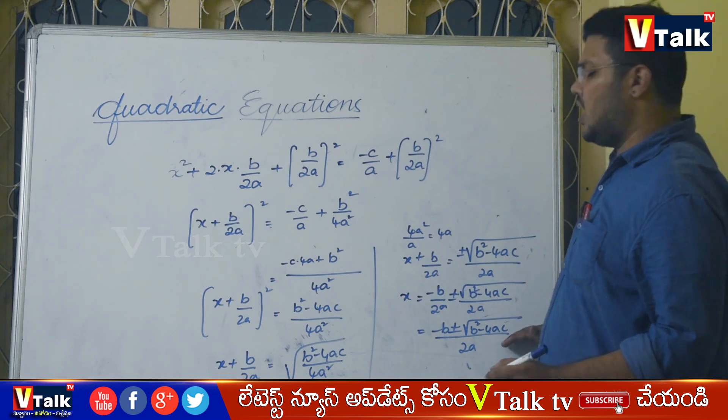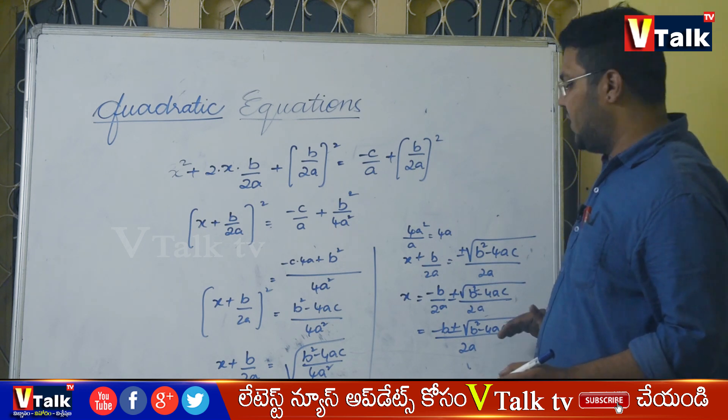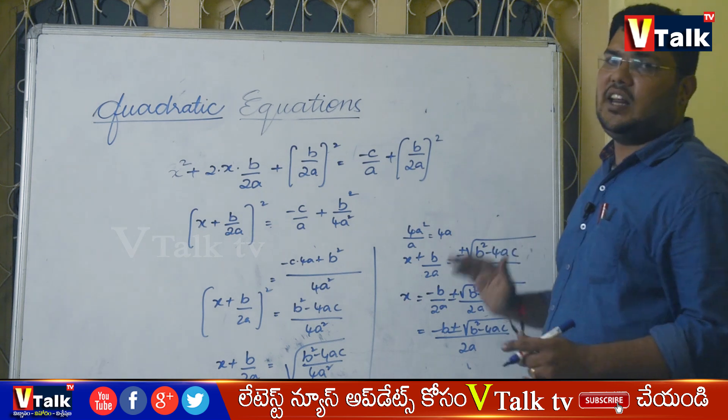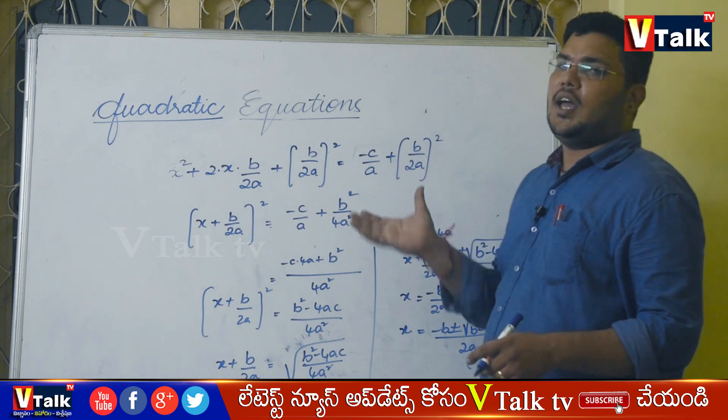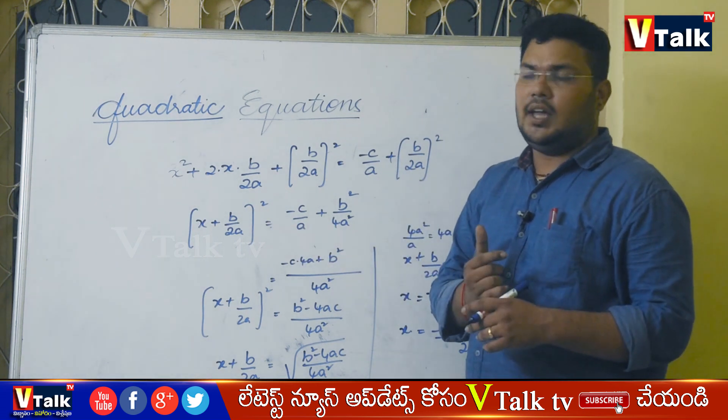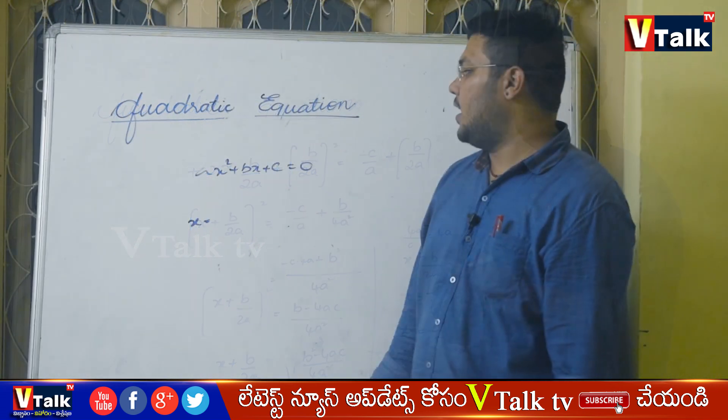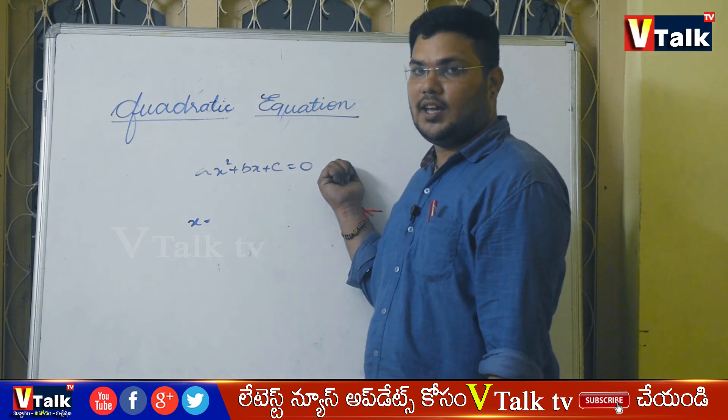This is the quadratic formula. This is its derivation using the completing the square method. Now applying this to examples: for ax squared plus bx plus c equal to 0, using the completing squaring method, the result is x equal to minus b plus or minus root over b squared minus 4ac by 2a. We will look at examples in the next class.